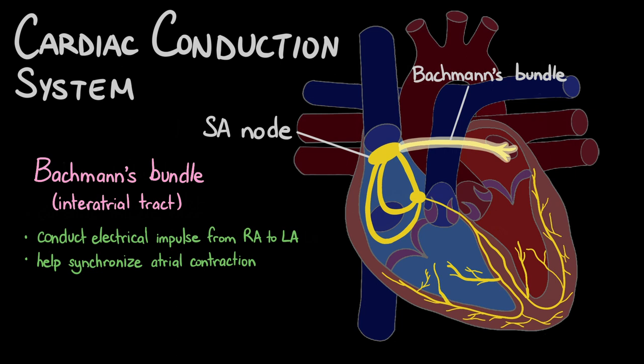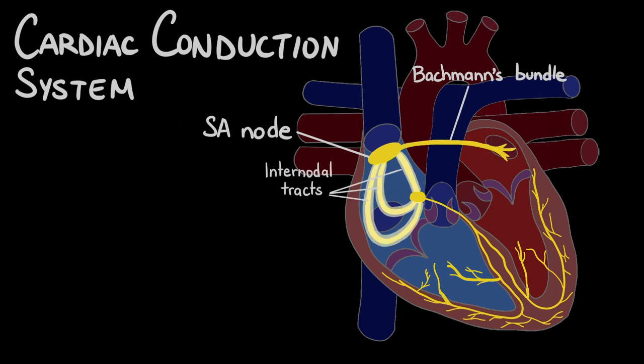Once the action potentials are generated, they travel through the atria via the internodal tracts and stimulate the atrial muscle cells to contract, which forces blood into the ventricles.